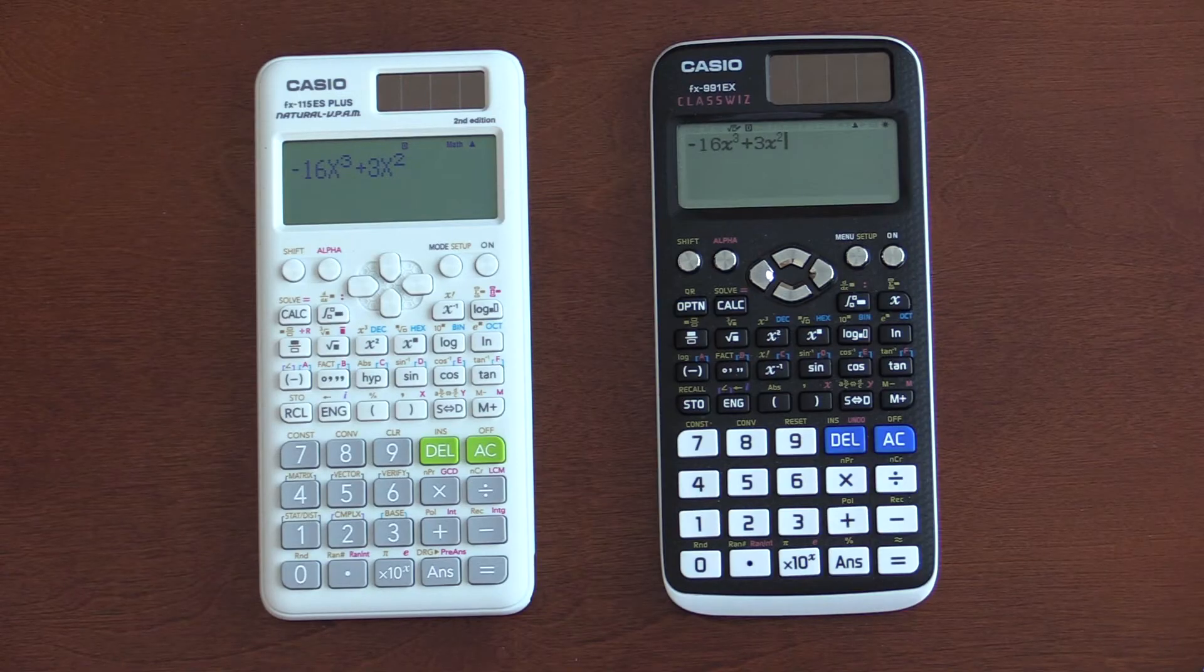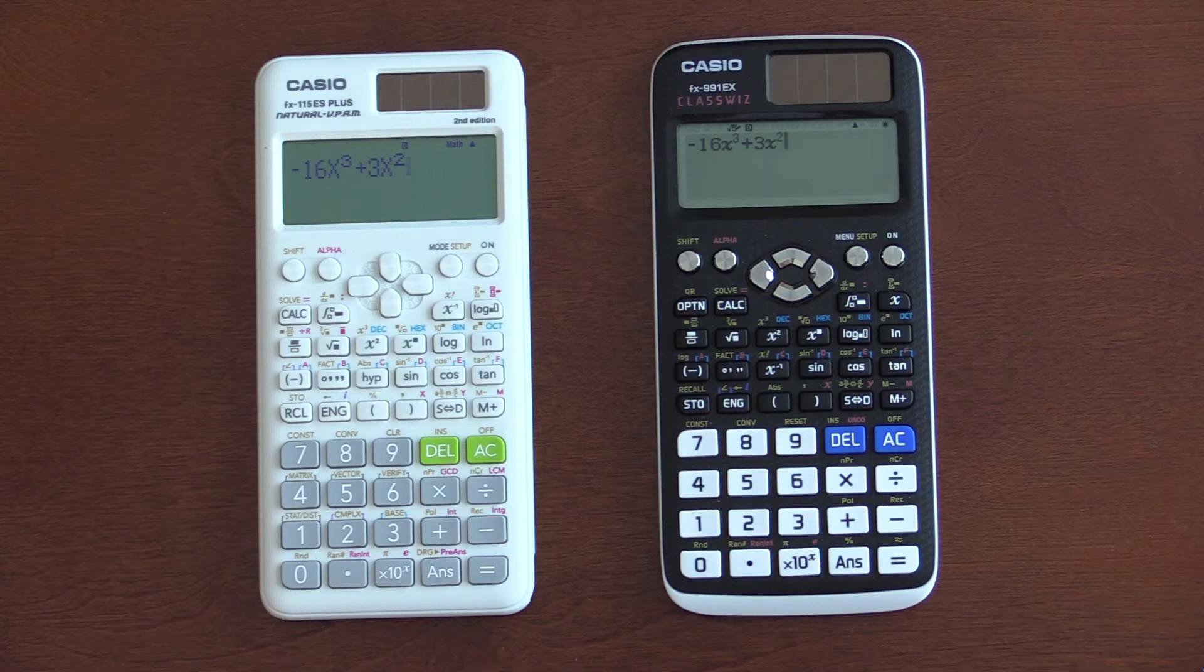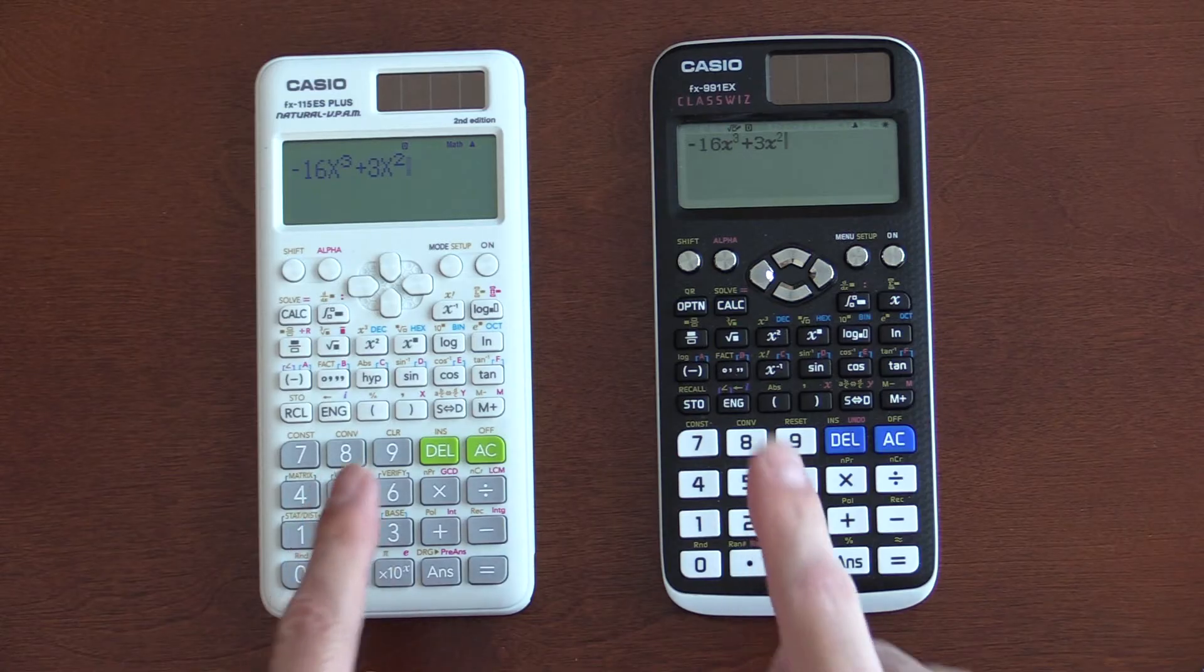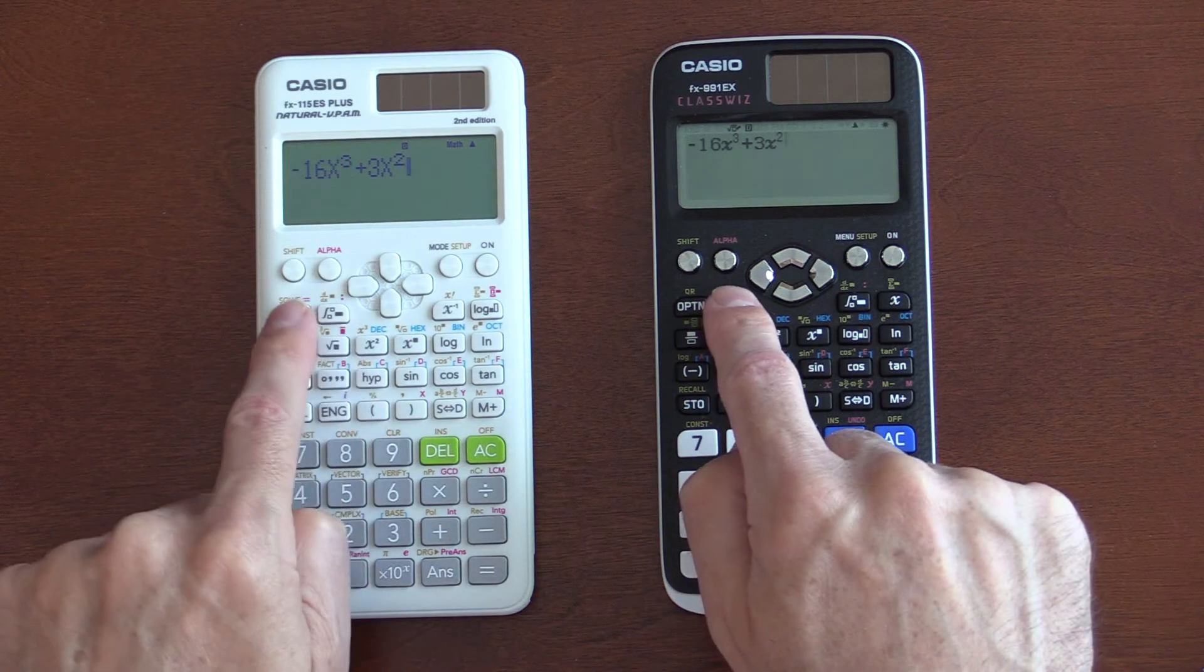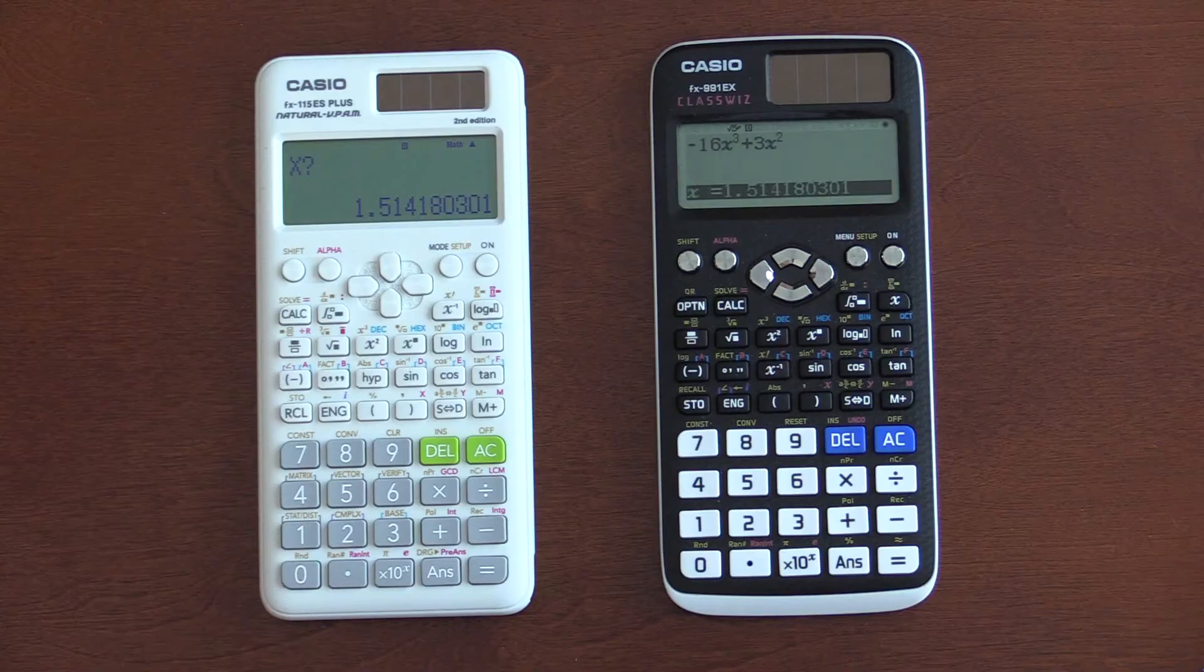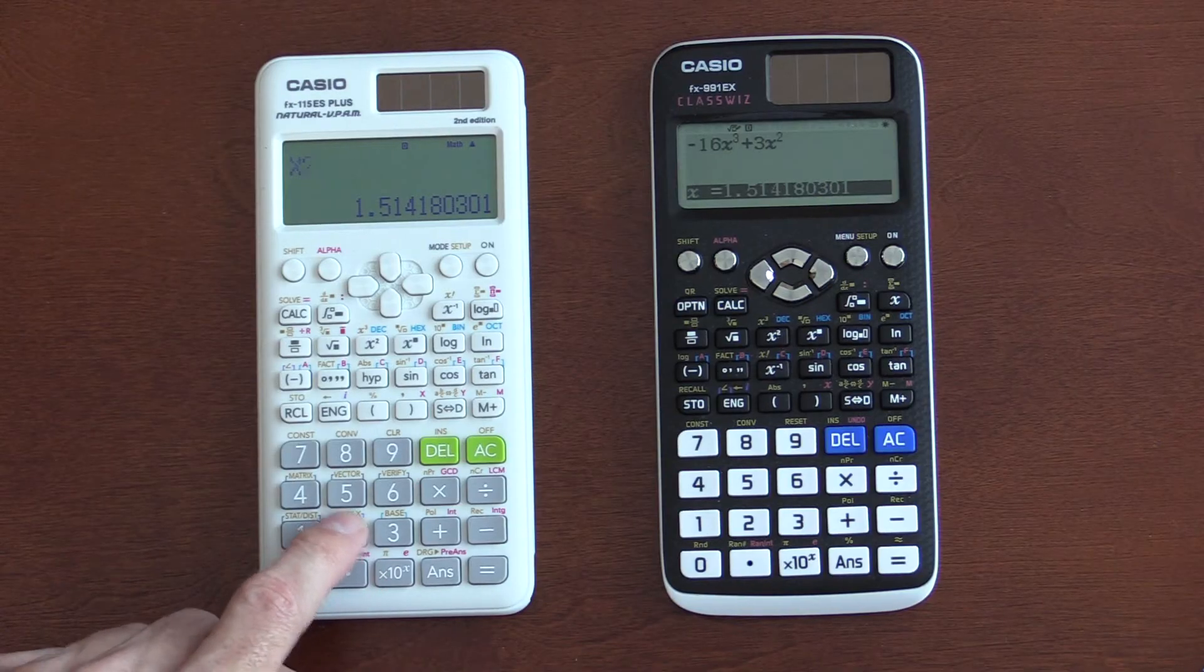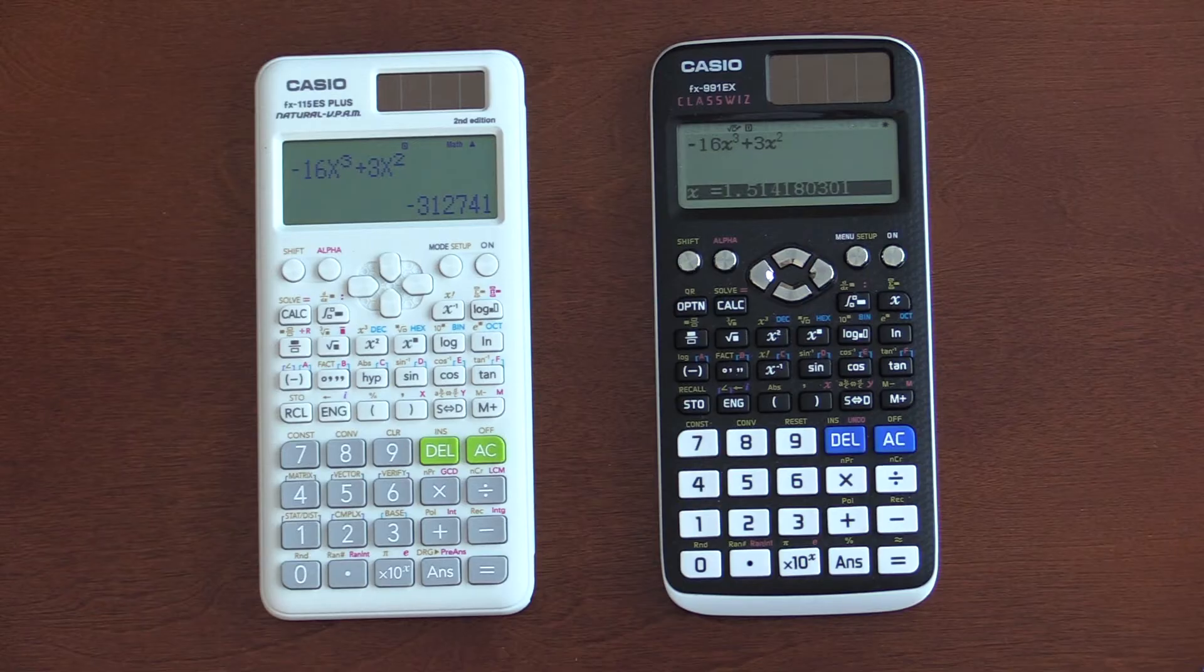I'd next like to show you how these differ in terms of handling the calc function. I believe the ES has a better, more intuitive approach. And, here's our equations. I've entered it on each of the calculators. And, I want to calculate it. Meaning, I want to plug in an x value. So, I hit calc. And, on the ES, I'm going to do 27. So, I type 27 and I hit equals and I get my answer.